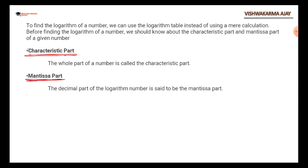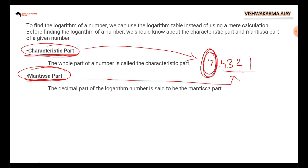Okay, there is another concept just before we start the logarithmic table. There are two terms called characteristics part and the mantissa part. Okay, the whole part is called characteristic and the decimal parts are called mantissa. For example, 7.4321. 7 is whole, so you know what it is called. This decimal part is called mantissa. That is it for now about this topic.